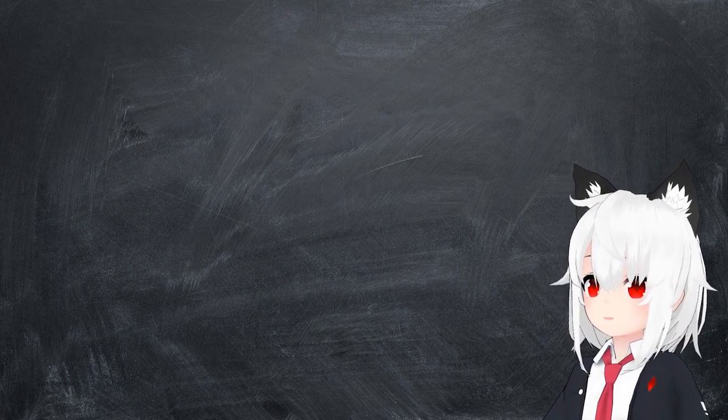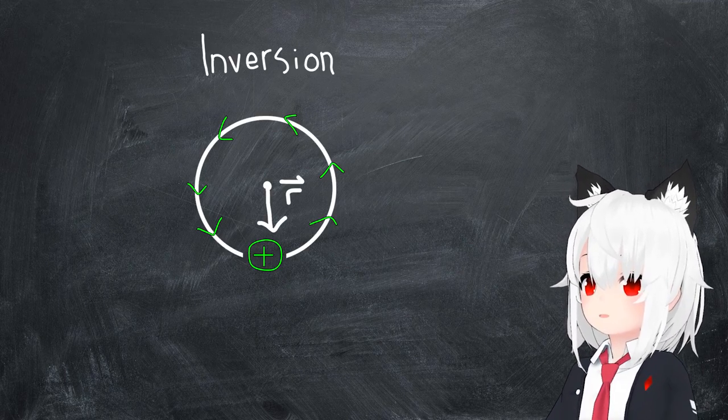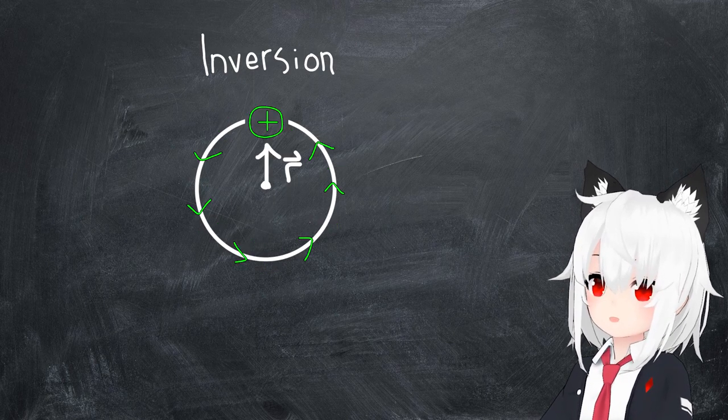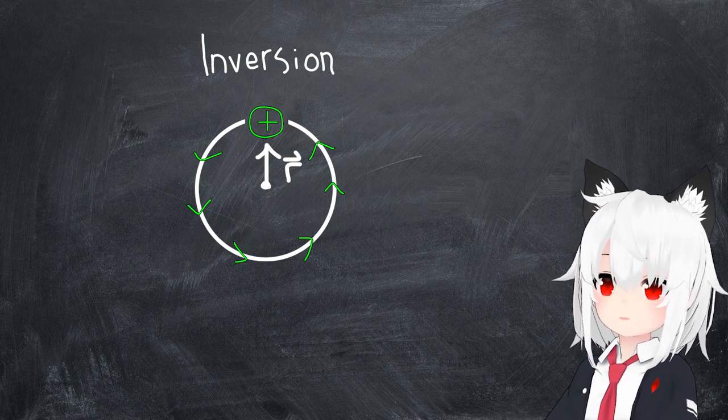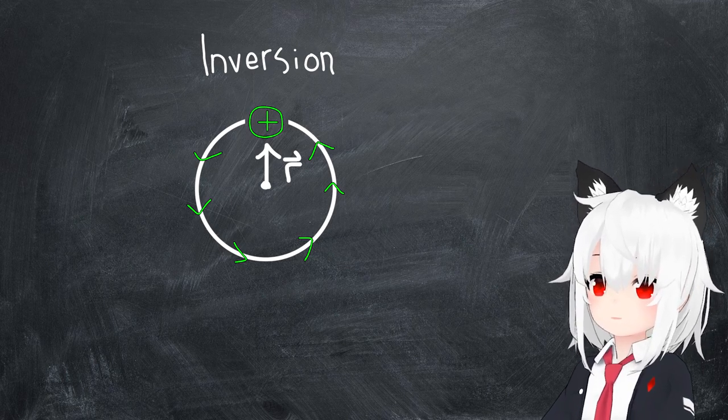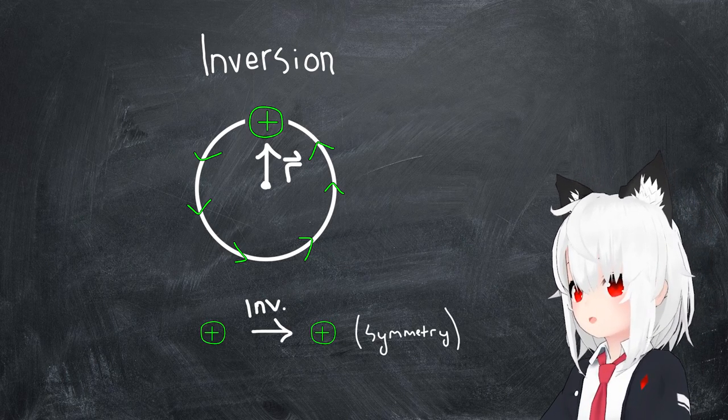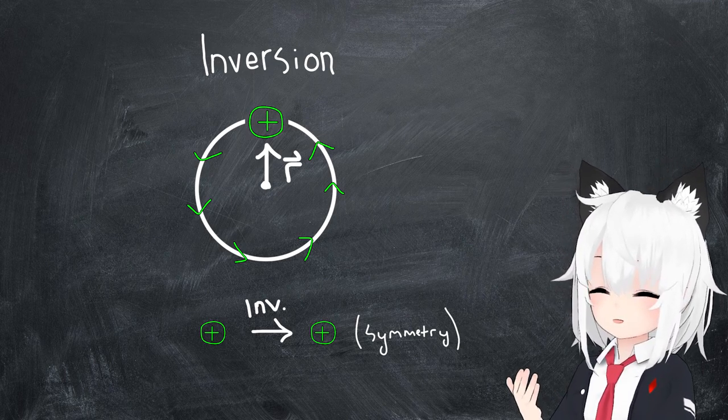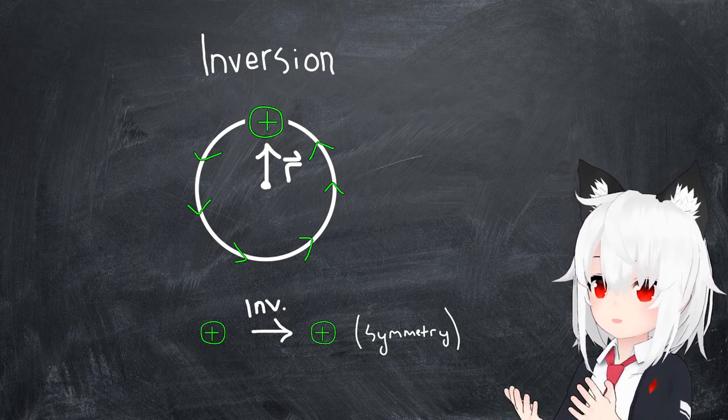Consider, for example, the case of the inversion operation. In this case, as we saw in our prior example, the position of the particle is transformed across the circle, and the fact that this was a symmetry was manifested by the fact that the particle itself didn't change upon this transformation. It remained in the same quantum energy state and didn't look any different.